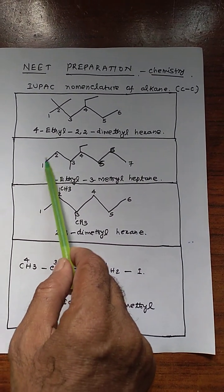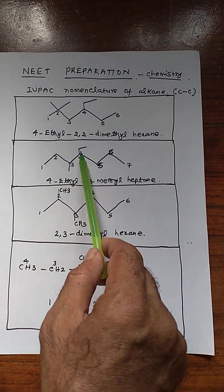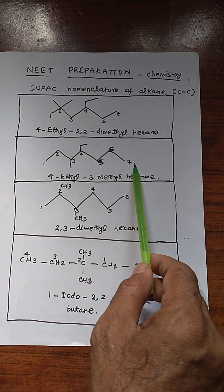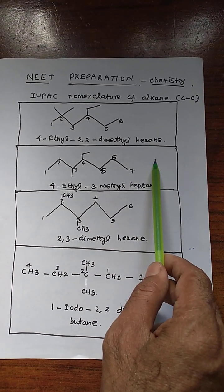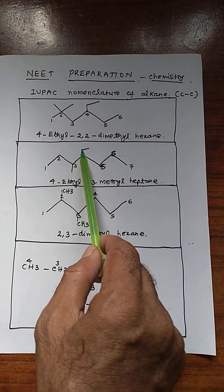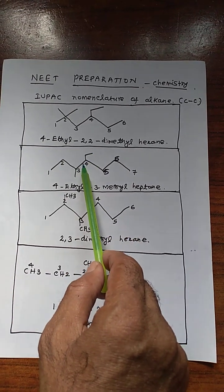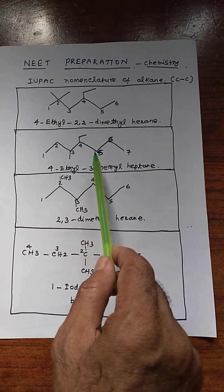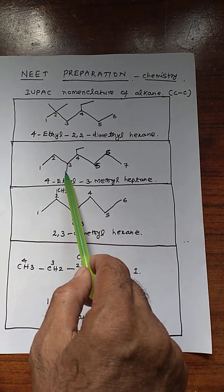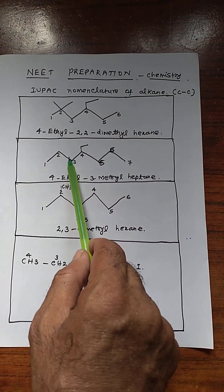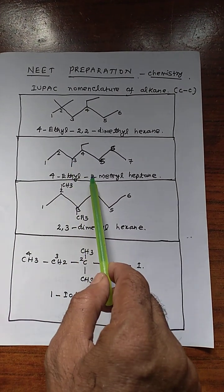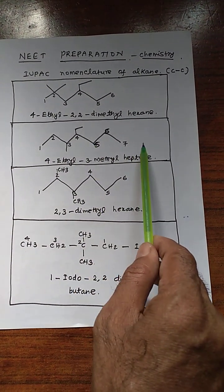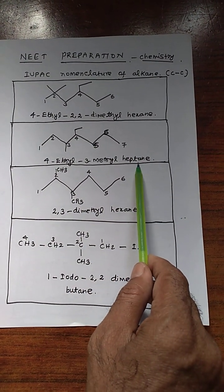Numbering to be done here: 1, 2, 3, 4, 5, 6, 7. So this one 4th position is ethyl — so 4-ethyl. Position 3 has a single CH3 stem — so 3-methyl. 7 carbons are linked together, so heptane. The name is 4-ethyl-3-methylheptane.